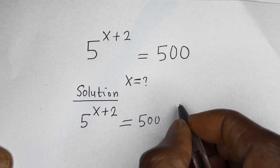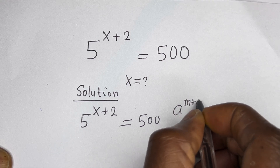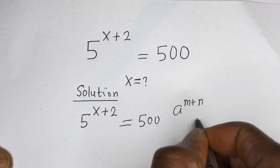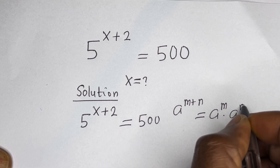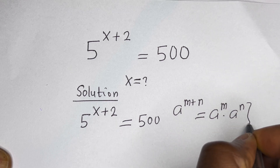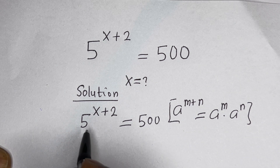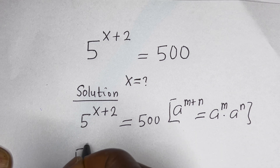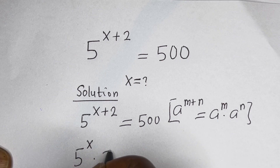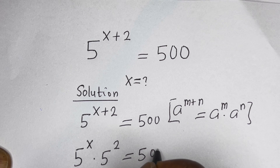Take note that if you have a raised to power m plus n, this is equal to a raised to power m multiplied by a raised to power n. This can be written as 5 raised to power s multiplied by 5 raised to power 2 is equal to 500.